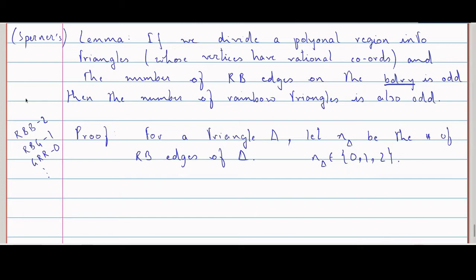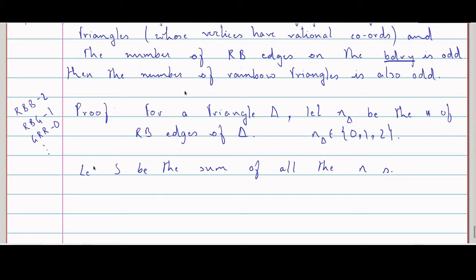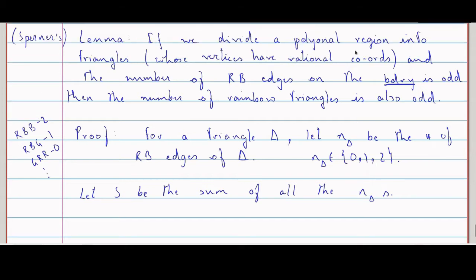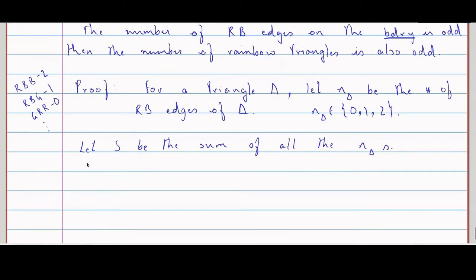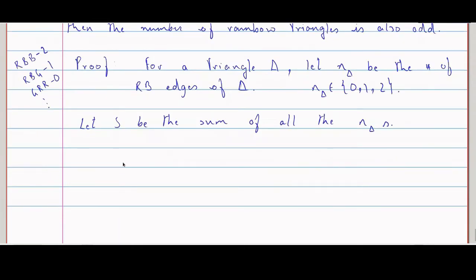We will let S be the sum of all the n(delta). We are adding because we have a finite number of triangles. When we say divide, it means finite — all divisions are finite. So we take the sum of all these triangles.